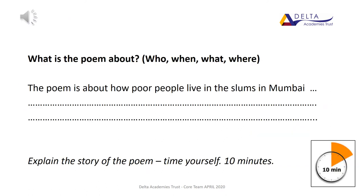Now we're going to write for 10 minutes about the poem. Whenever we write about a poem, we always start by telling the story. What's the poem about? We think about the who, when, what and where and we explain the story. There are some notes on the next slide to help you with this, and you can use information that you've already discovered on previous slides.